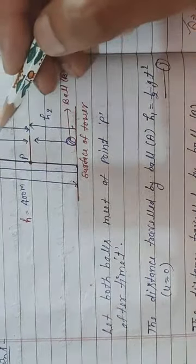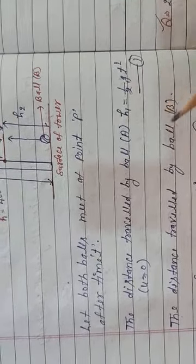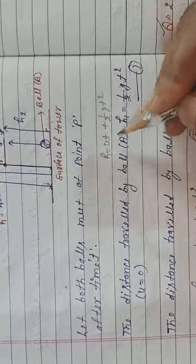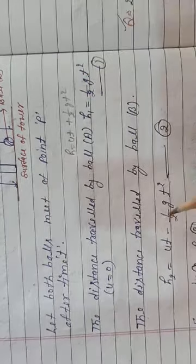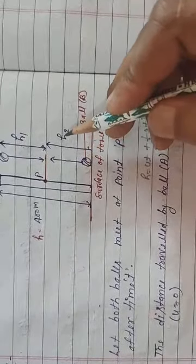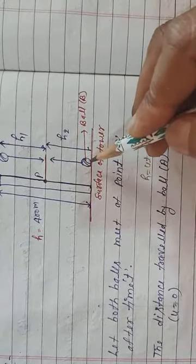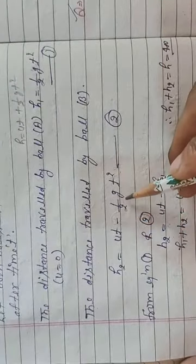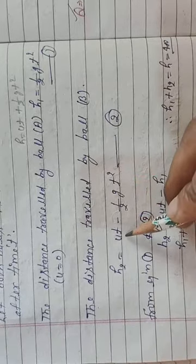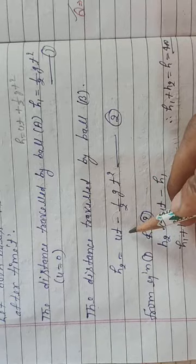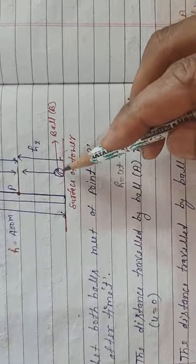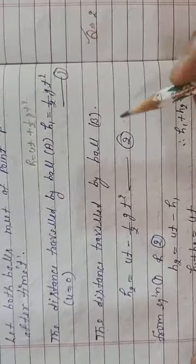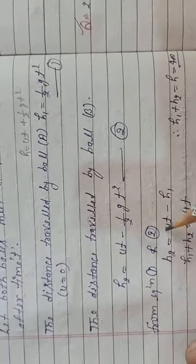For ball B, travelling vertically upward, we use h2 = u₂t − ½gt². Here u is not zero because ball B has some initial velocity, so h2 = u₂t − ½gt². This is equation number 2. From equations 1 and 2, we substitute h1 = ½gt² into the expression for h2.